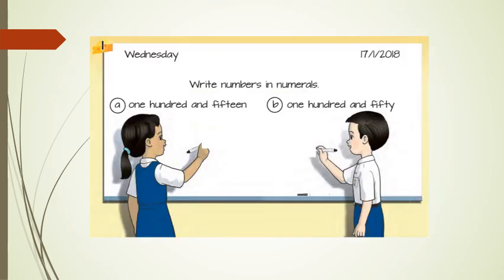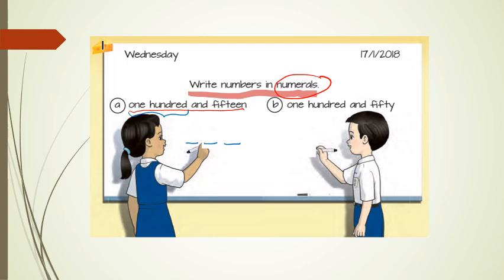We will look at the first example. They ask you to write numbers in numerals. Numerals means number. Look at the first one, number A: one hundred and fifteen. So how to write in numerals? The clue is it must have three digits. One hundred is here.